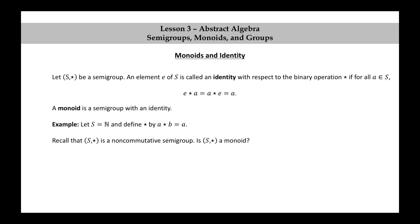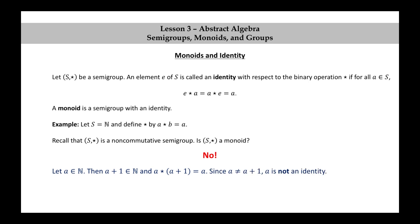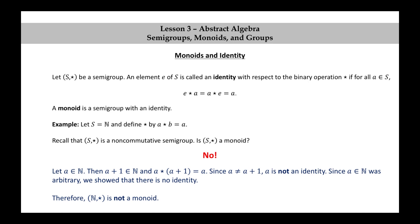Is it a monoid? No, this one is not a monoid. The proof is very similar to the last example. Let A be a natural number. Then A plus one is also a natural number, and A★(A+1) is equal to A. Since A is not equal to A plus one, A is not an identity. Since the natural number A we chose was arbitrary, there is no identity. Therefore, the natural numbers together with this operation ★ is not a monoid.